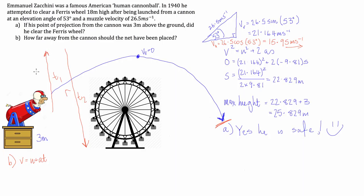We know when we get to our maximum height that our final velocity is zero. We know our initial vertical velocity is 21.164, and we know our acceleration is negative 9.81, and this is time one. Time one is equal to 21.164 divided by 9.81.